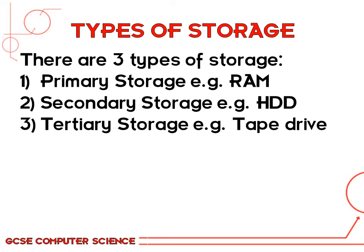Secondary storage, which is what we're mainly focusing on here, is non-volatile and is where we save our files and programs when they're not in use. Tertiary storage is also non-volatile and is used for more long-term storage that you don't need to access quickly. You would use this for things like backups and archiving files.